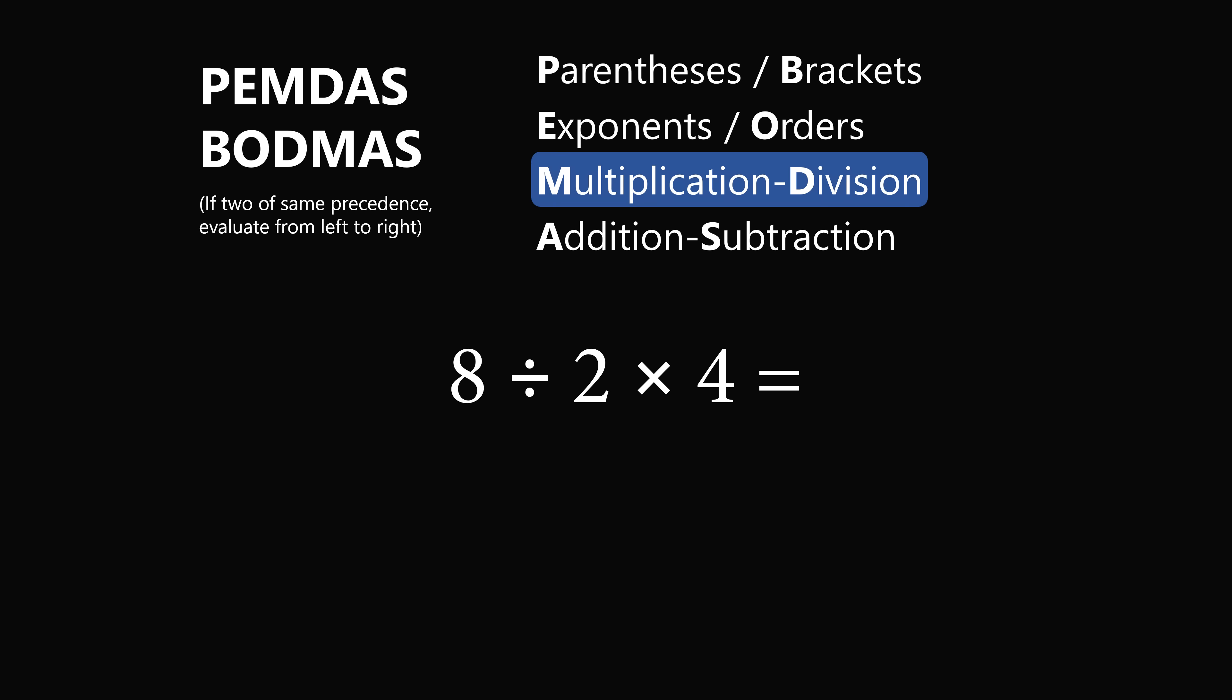So in this expression, we have only multiplication and division, which are of the same precedence, so we want to evaluate them from left to right. So we start with 8 divided by 2, which is equal to 4. Then we have 4 multiplied by 4, and that gives the correct answer of 16. This is without a doubt the correct answer according to the modern interpretation of the order of operations.